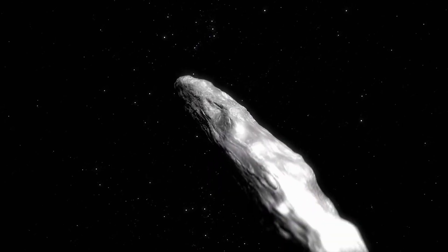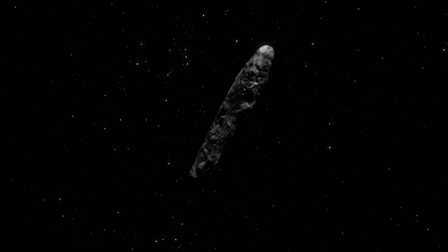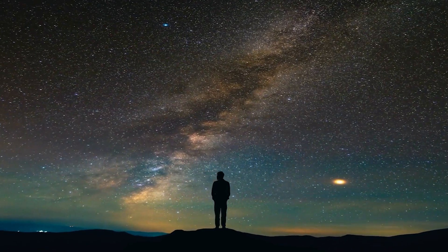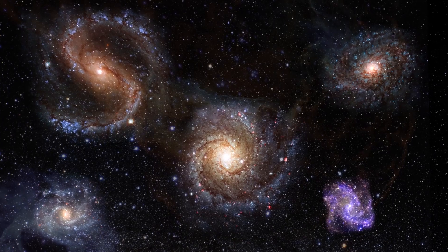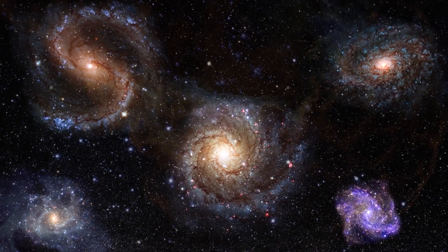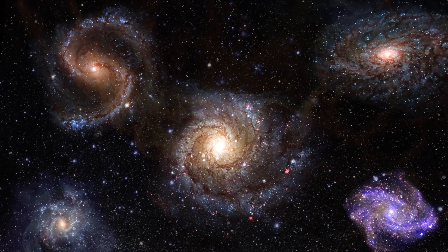What is this companion object? Could it have influenced Oumuamua's strange journey into our solar system? And what could this mean for our understanding of the universe? Or could it hint at something even more unsettling? Share your thoughts in the comments below. And don't forget to click on the next video for more jaw-dropping content.